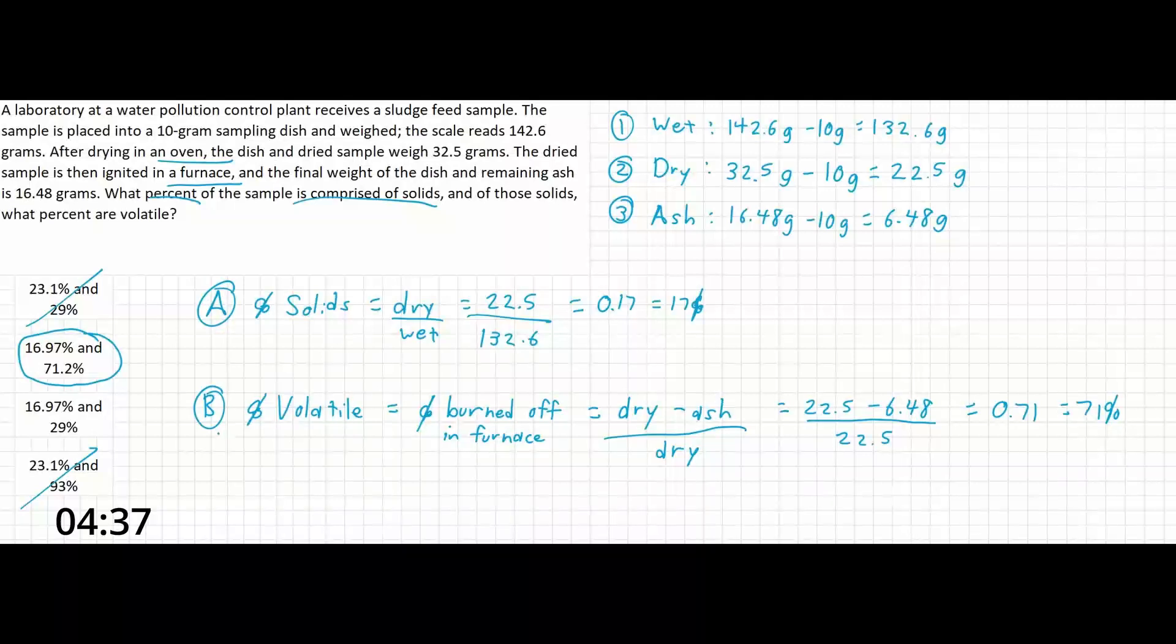Similarly, if you calculated A incorrectly by dividing the weight of the dry dish by the weight of the wet dish, you would have found an answer closer to 23 percent and selected either the first or the fourth answer.